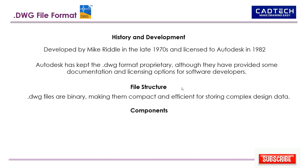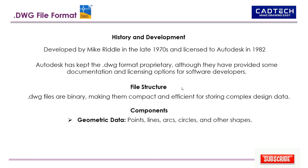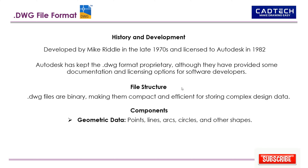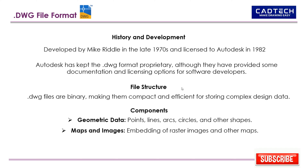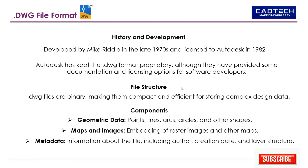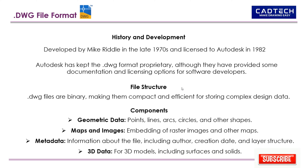Components of a DWG file include: geometric data such as points, lines, arcs, circles, and other shapes; maps and images, including the embedding of raster images; and metadata — information about the file including author, creation date, and layer structure.